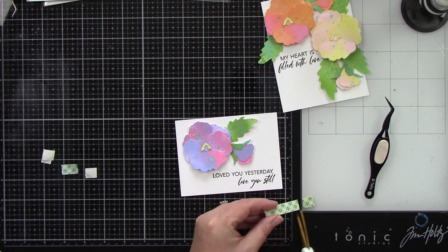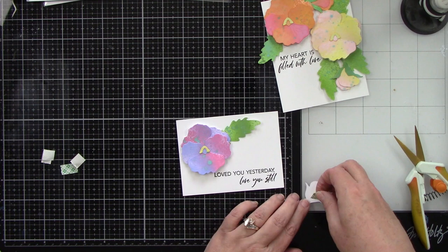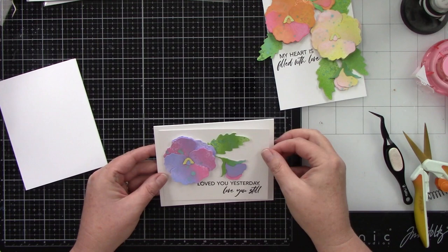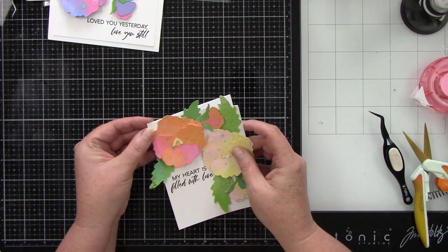Then we have this smaller one here. Again, doing the same thing, just leaving that leaf in place, adding foam tape behind the main flower, a little bit of foam tape behind the bud, and putting that in place. And I like the way that the sentiments are tucked around and into the flowers.